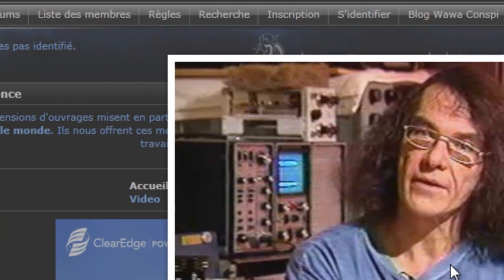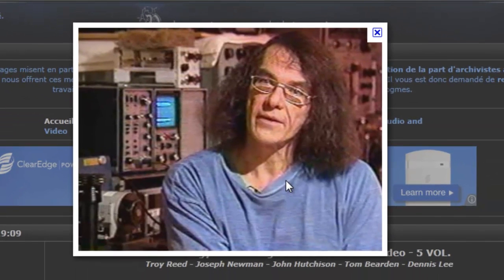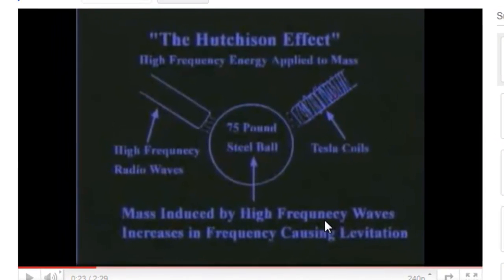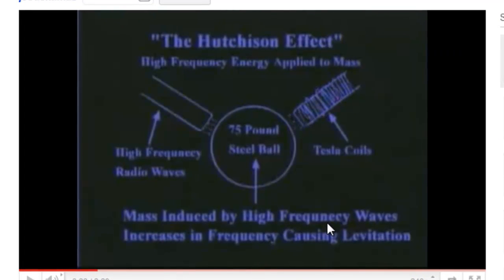David got this idea from researcher John Hutchison, who is famous for his amazing experiments in which he will send certain frequencies of energy into objects including a cannonball, a toothbrush, or even wood, causing many of the objects to move, float, or even fly off the table. This effect, called the Hutchinson effect, utilizes high frequency radio waves and a Tesla coil to raise the frequency of the physical object until it begins to float.